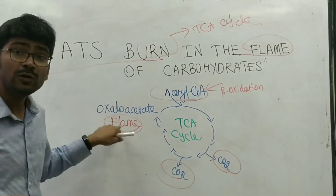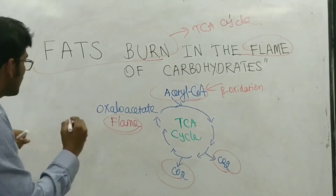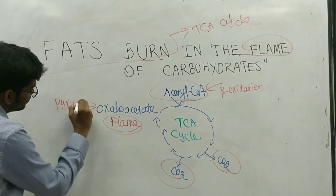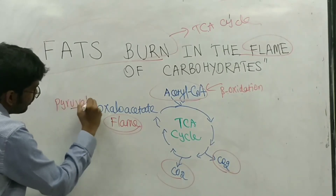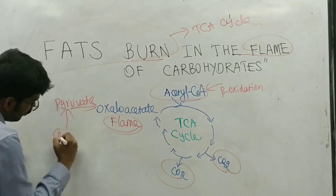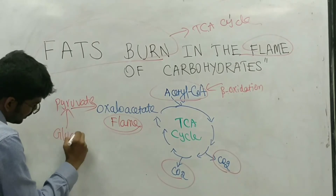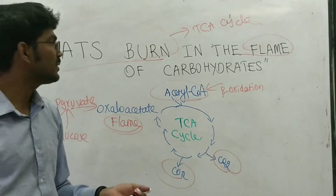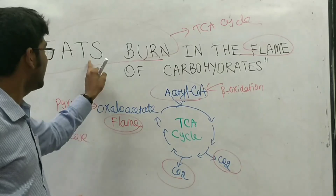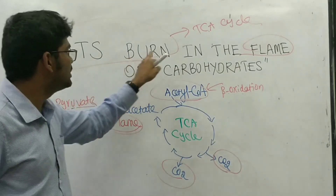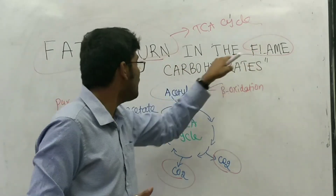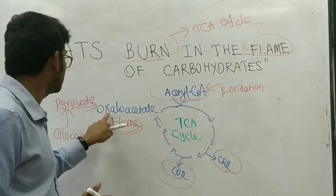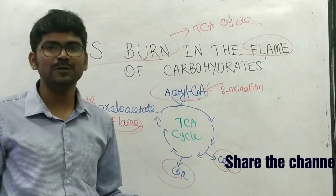What is the source of this flame? Oxaloacetate comes from pyruvate. Pyruvate comes from glucose — the end product of glycolysis is pyruvate. That is why we say fats burn in the flame of carbohydrates. Oxaloacetate is produced from glucose.